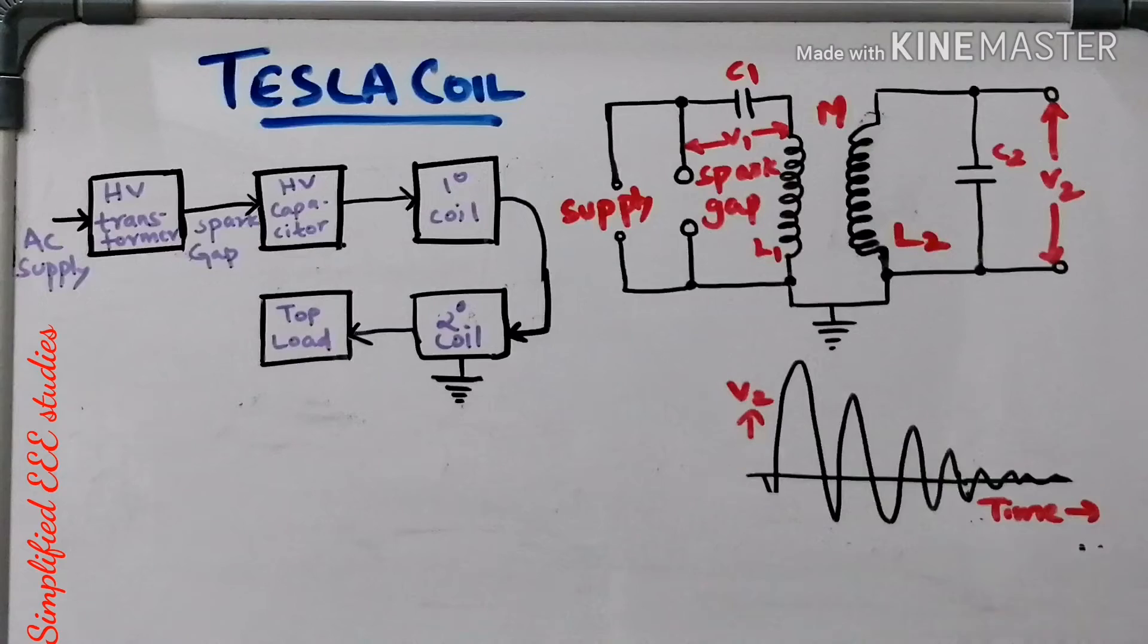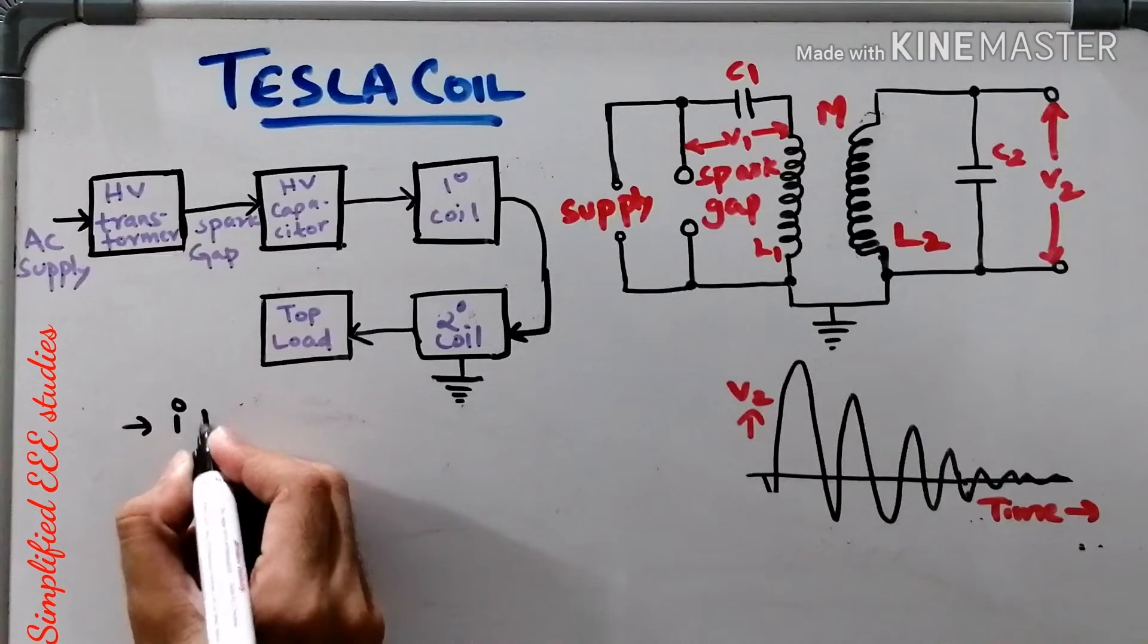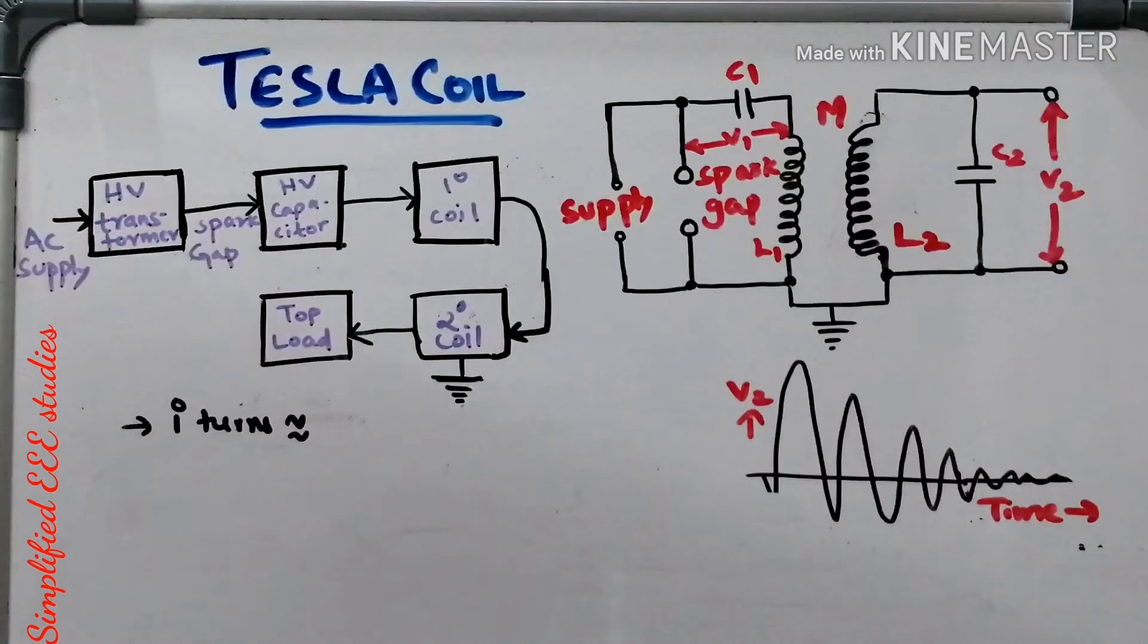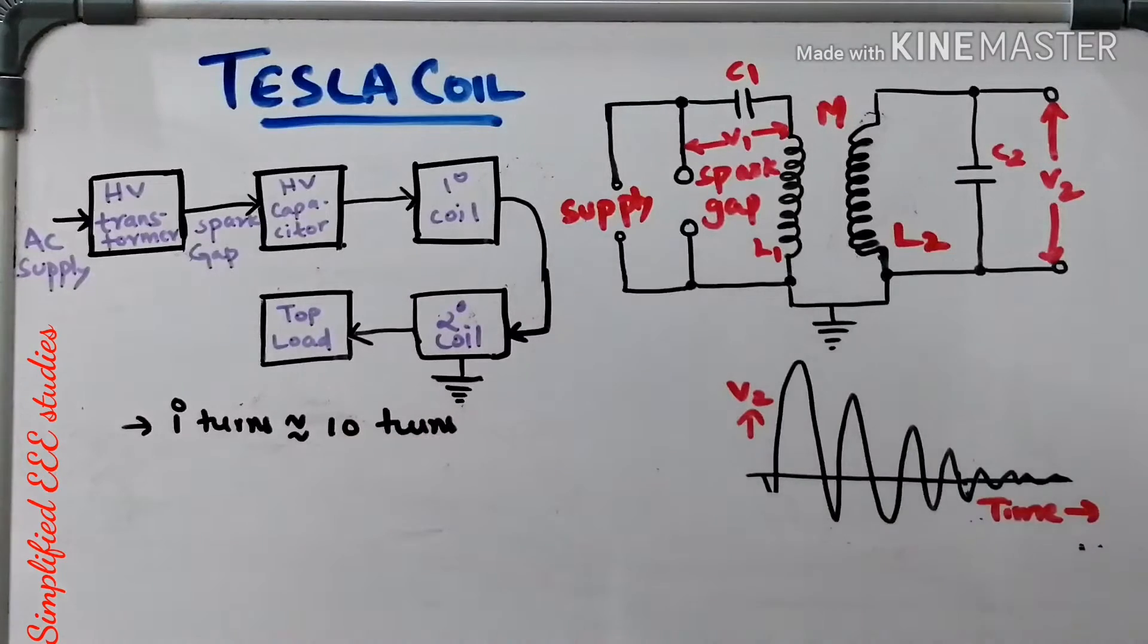First of all, the primary turns, the primary winding or primary turns, it will be approximately 10 turns. It depends on the design. I will be giving one approximate count.